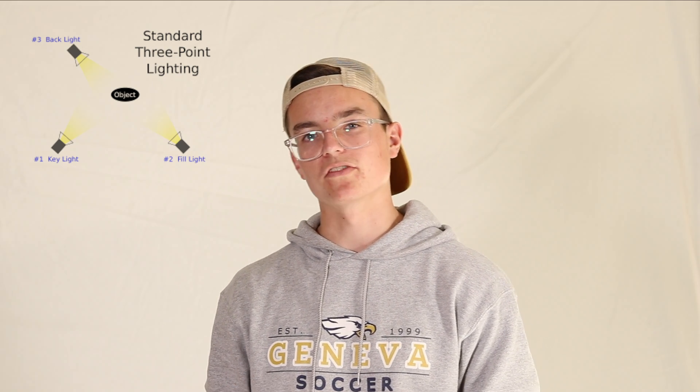The next light you should know as part of the basics is the fill light. Normally the key light goes about 45 degrees to the right of the camera, and the fill light goes about 45 degrees to the left. Its purpose is to fill in the shadows that the key light creates, helping produce the depth you want.